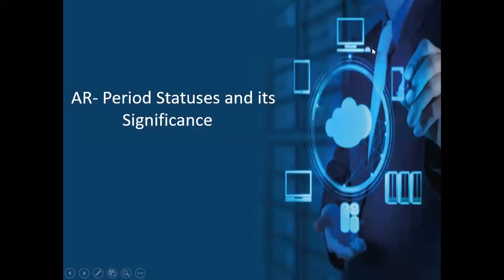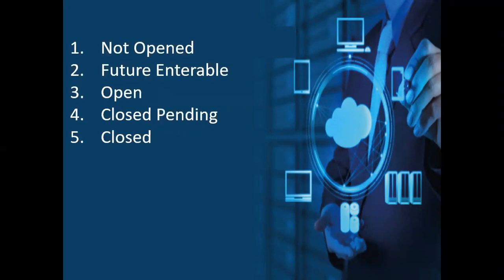Hello, welcome back to my YouTube channel. In my previous video I explained about the significance of period statuses for the GL and AP modules. In my current video I'll explain the significance of the period status for the AR module. These are the different statuses of periods in the AR module: Not Open, Future Interval, Open, Close Pending, and Closed.